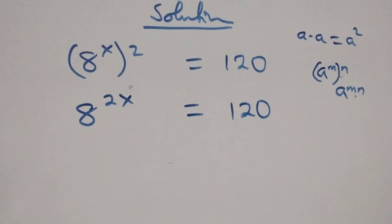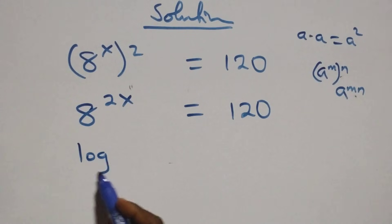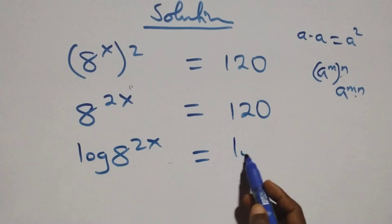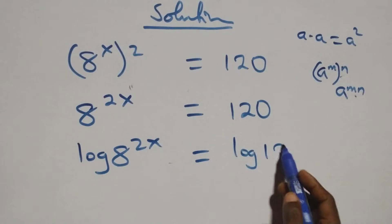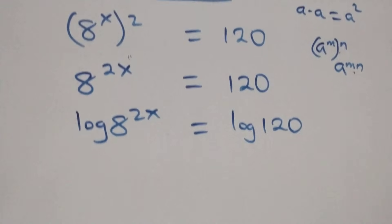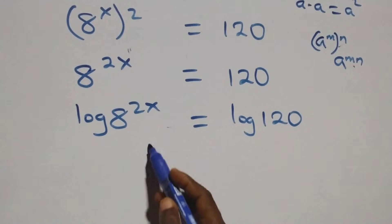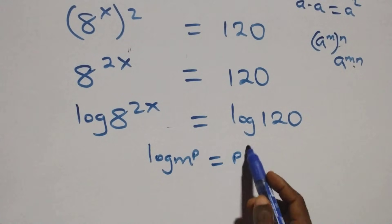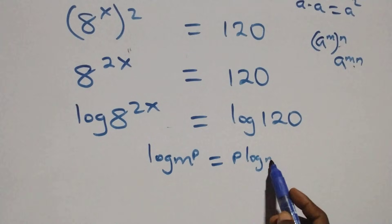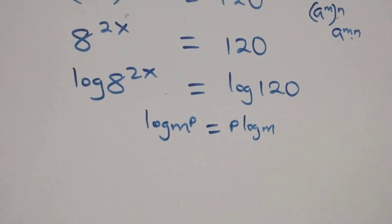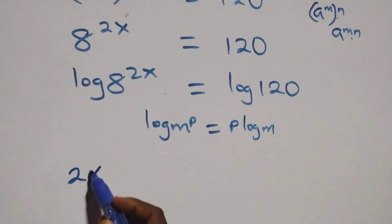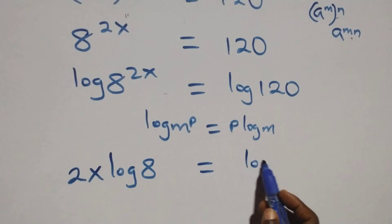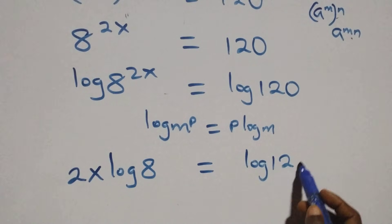In the next step, we take the log on both sides. We have log of 8 raised to power 2x equals log 120. Then we apply the power rule of logarithms, where log of m raised to power p is the same as p times log m. So we get 2x·log 8 equals log 120.